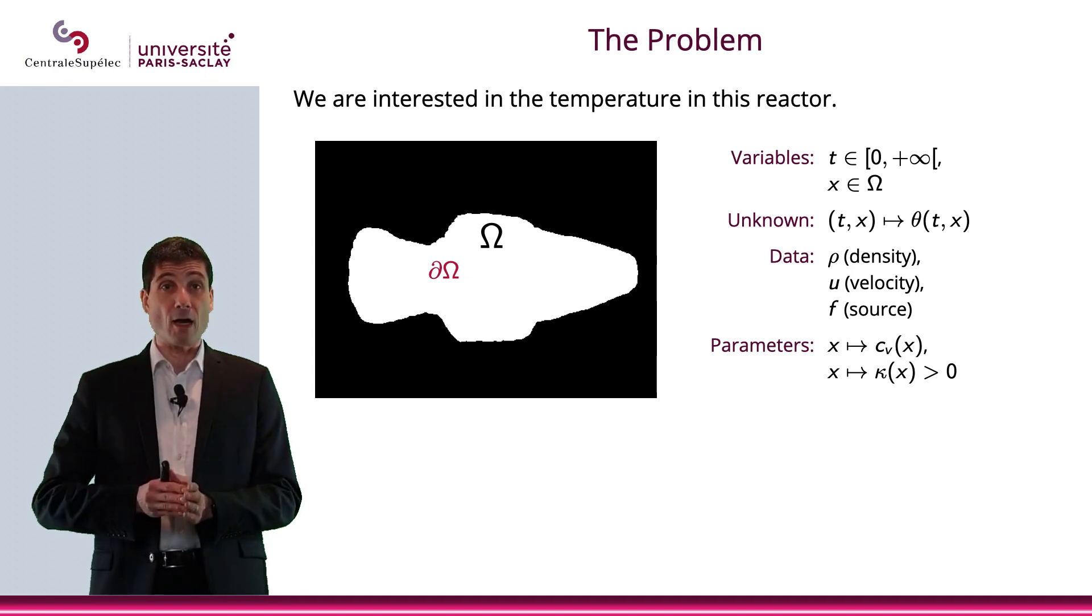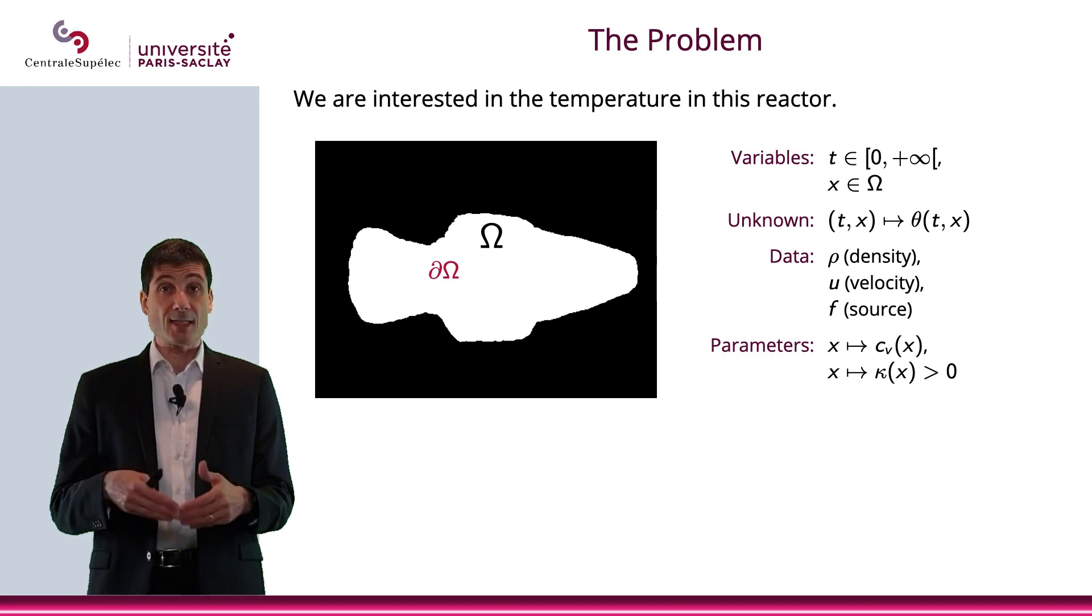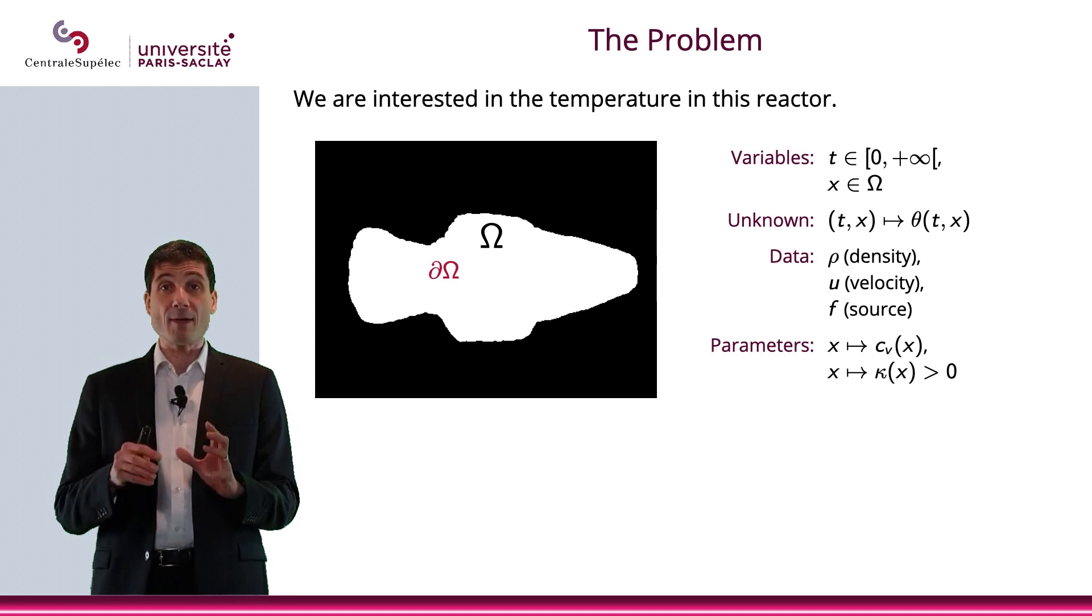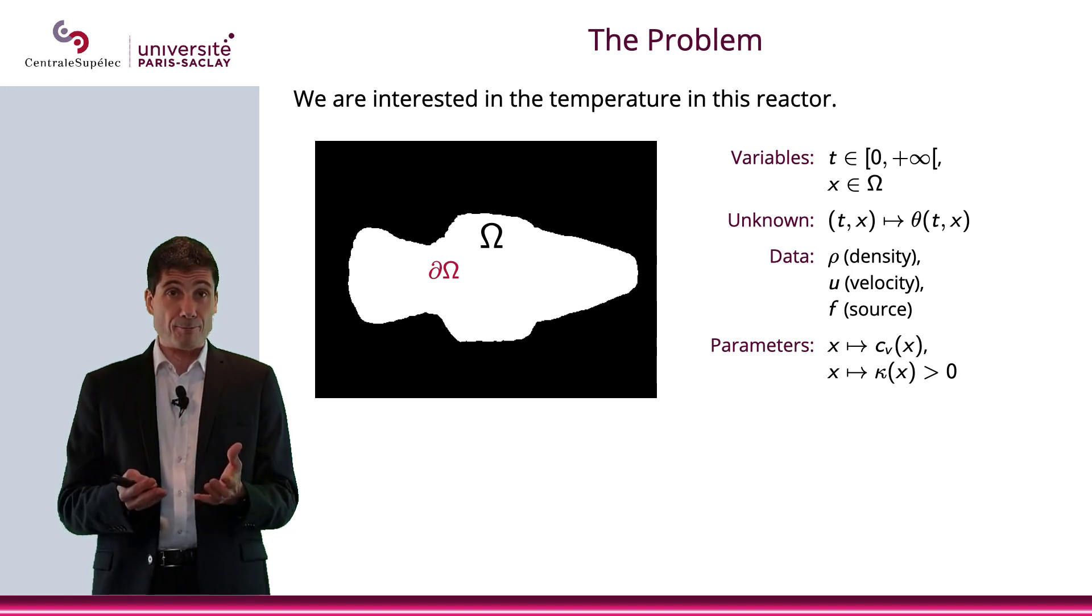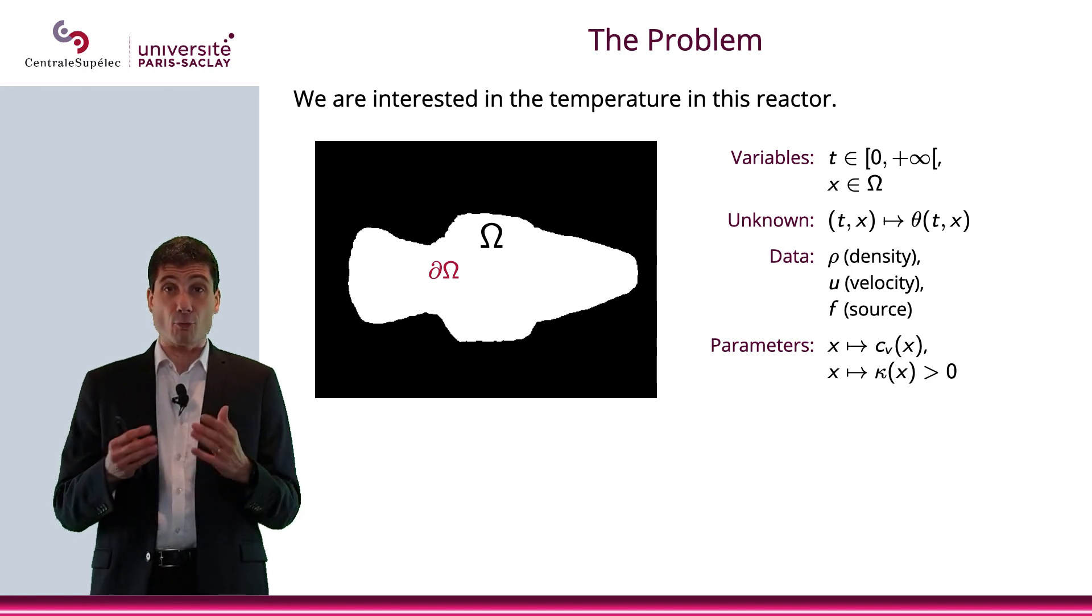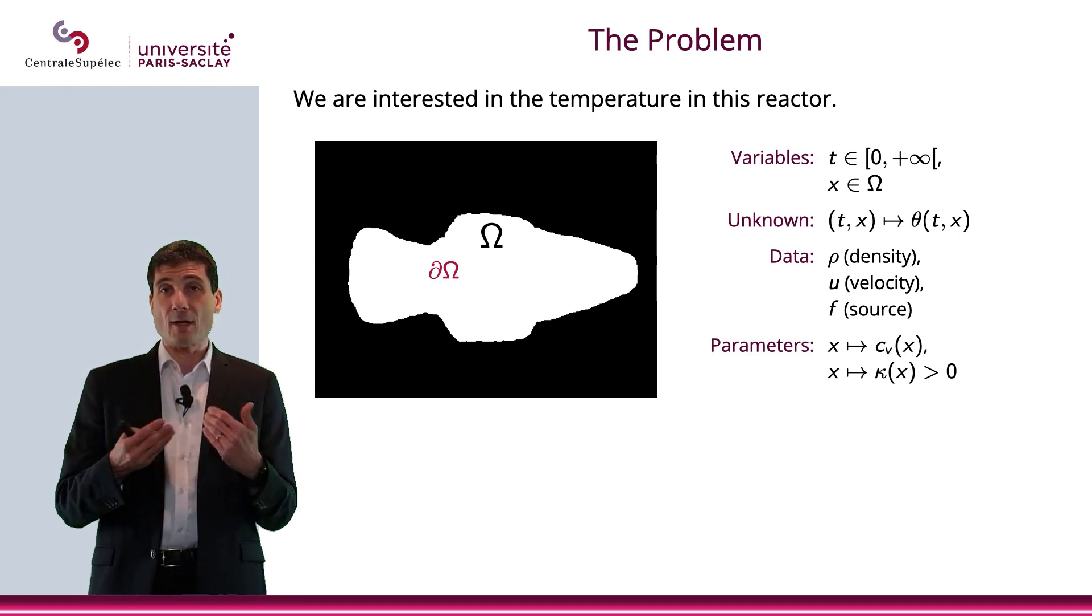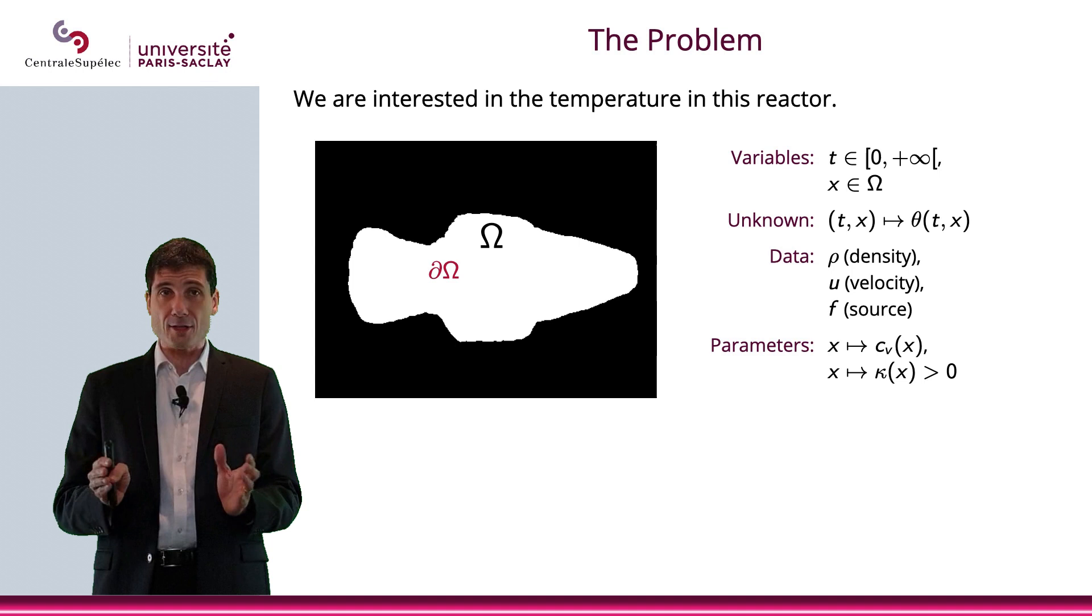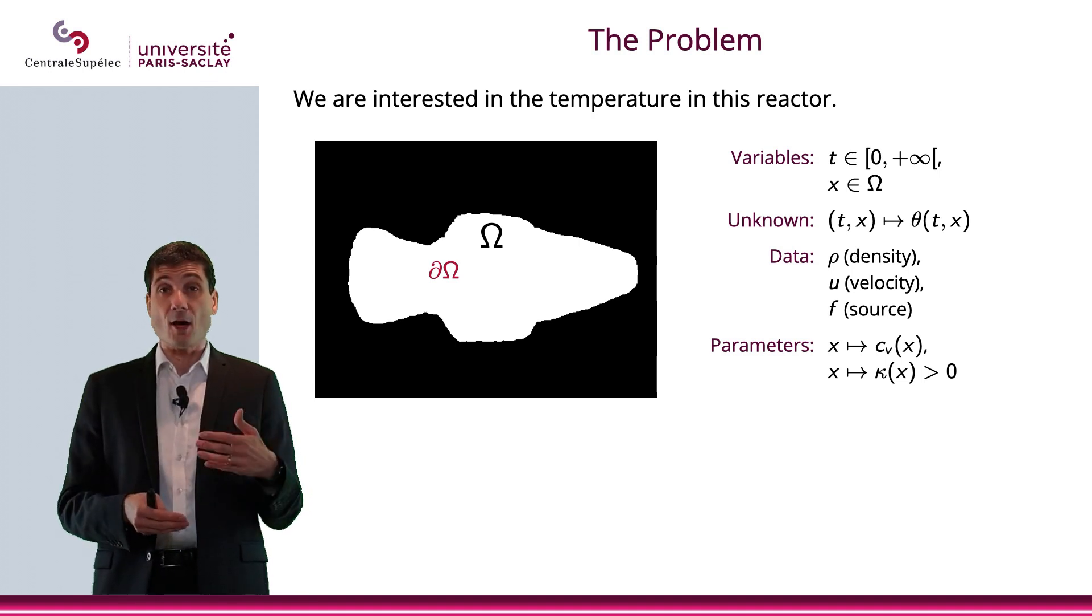There will be several parameters that will play a role here. The first is the density, the density of the fluid. The density tells you how many kilograms of matter you have in a cubic meter. So that is ρ. We can consider ρ might depend on x and t. We might consider it as a constant just to simplify things.